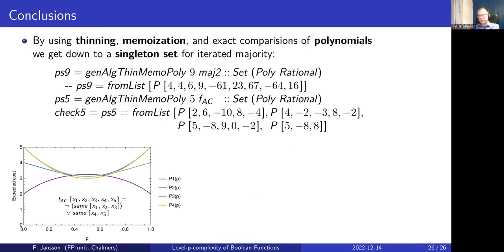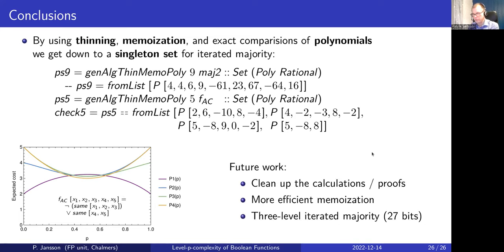To summarize: using thinning, memoization, and exact polynomial comparison, for the iterated majority we get a singleton set; for FAC we get the set of four polynomials shown earlier. Future work includes cleaning up the calculation, completing the Agda proof, making memoization more efficient — possibly one table per level — and potentially reaching the 27-bit three-level iterated majority, which has not yet been computed.